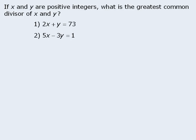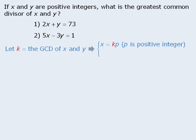Before we examine each statement, let's let k equal the greatest common divisor of x and y. So if k is a divisor of x, then x can be written as k times some positive integer p. Similarly, if k is a divisor of y, then y can be written as k times some positive integer q.